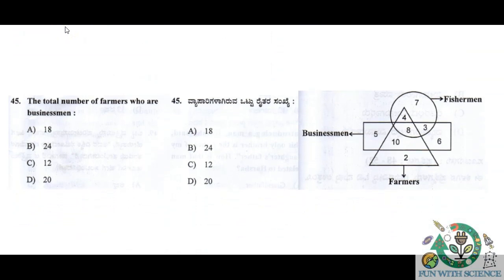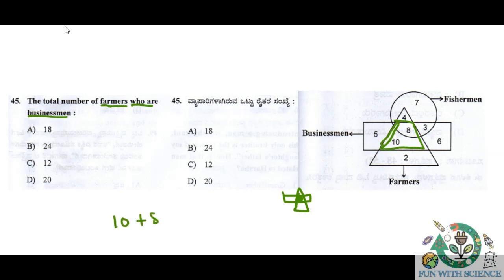Question number 45: the total number of farmers who are businessmen. Farmers are represented by the triangle and businessmen by the rectangle. We have to look at the triangle and rectangle intersection part only. The answer is the triangle and rectangle intersection, which gives us 10 plus 8 equals 18.